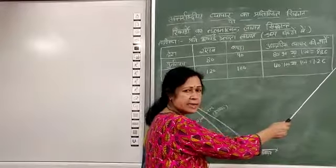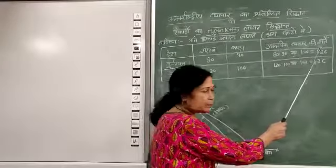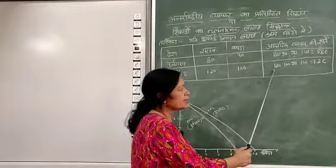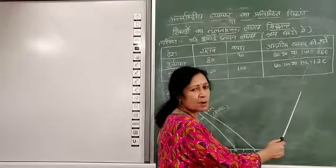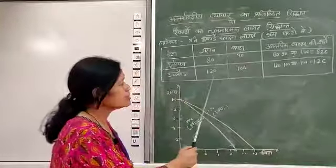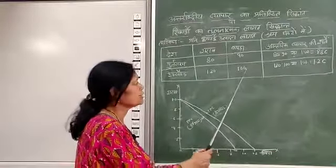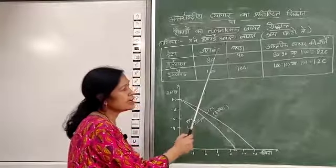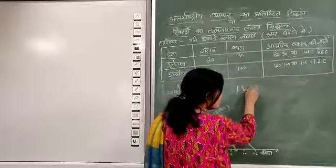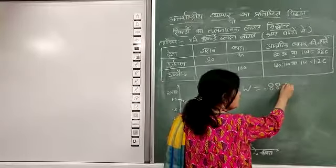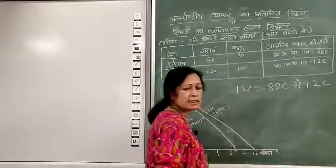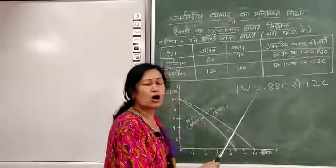विनिमय दर निर्धारित होती है। इसको अधिक व्याख्या करते हुए रिकार्डो ने यह explain किया कि इसके आधार पर जो अन्तर्राष्ट्रीय विनिमय दर निर्धारित होती है वो 1W is equal to 0.88C से 1.2C तक, इसके बीच में कहीं भी विनिमय दर निर्धारित हो सकती है।